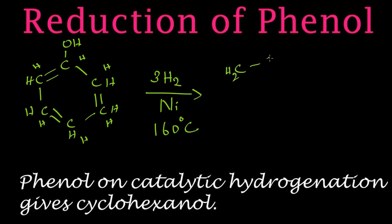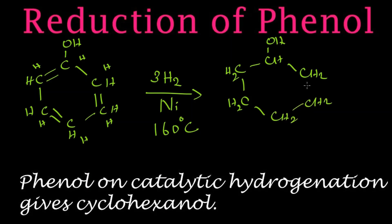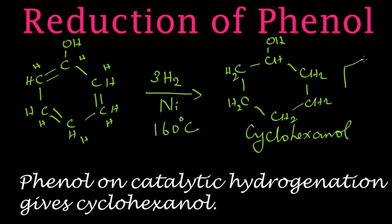The product is: CH₂, CHOH, CH₂, CH₂, CH₂ — with single bonds throughout, removing all double bonds due to hydrogen addition. Each carbon has four bonds. This compound is known as cyclohexanol.